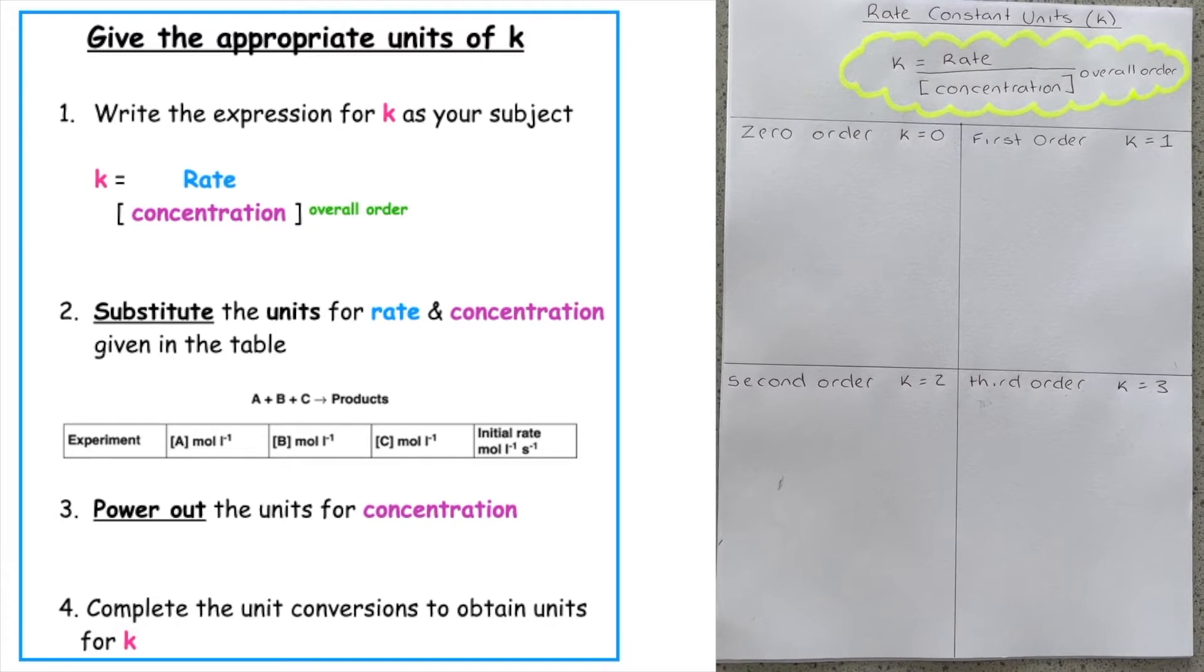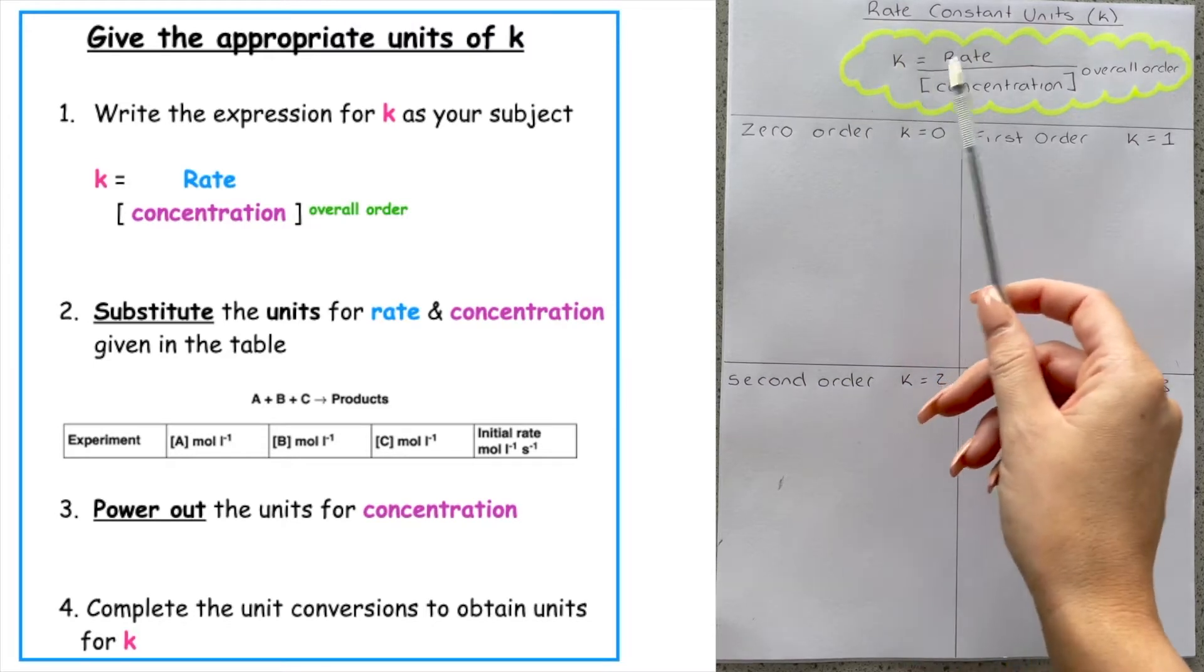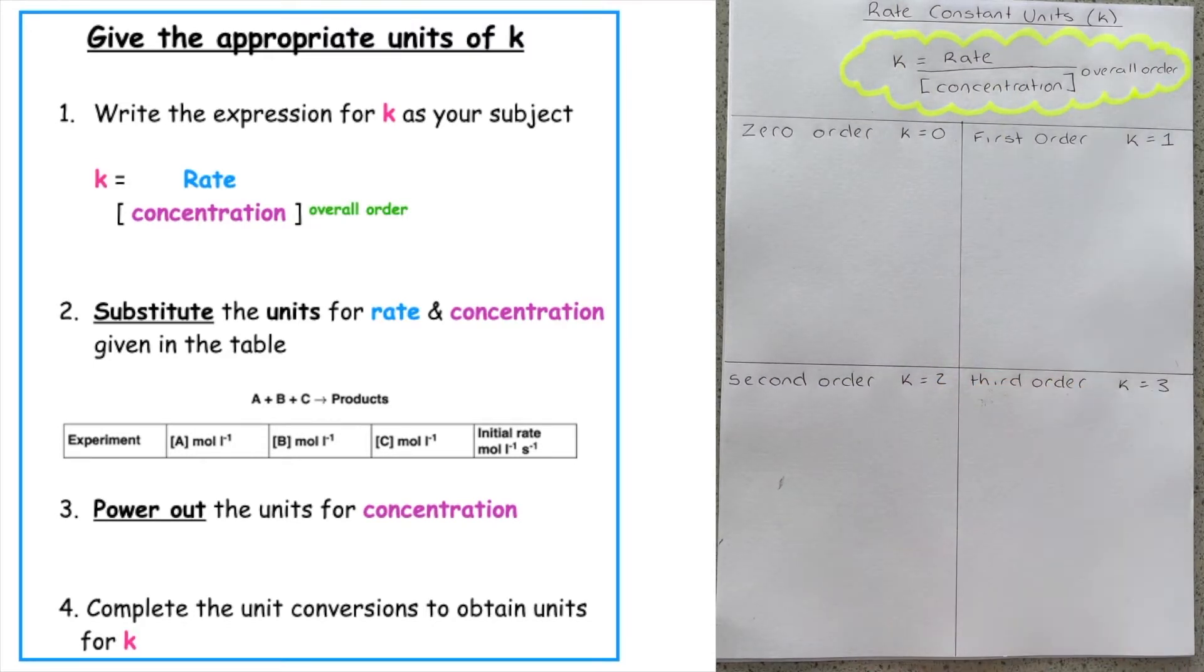Today we're going to be looking at giving the appropriate units of k, which is our rate constant. The first step we have to do is to write our expression for k as your subject. So rearranging your rate equation, which we have done in a previous step from your data, we get k is equal to rate over concentration to the power of the overall order.